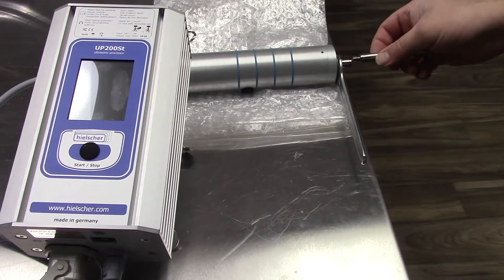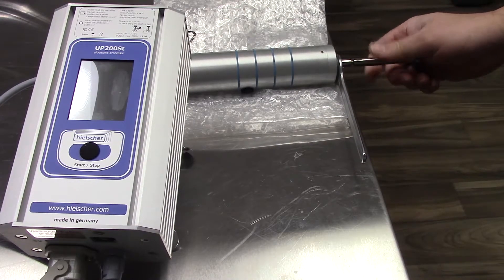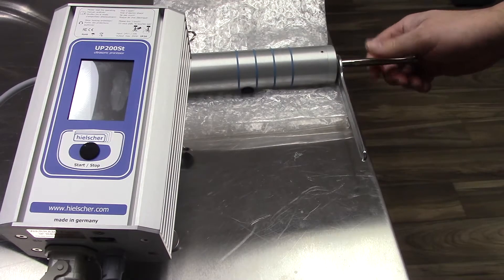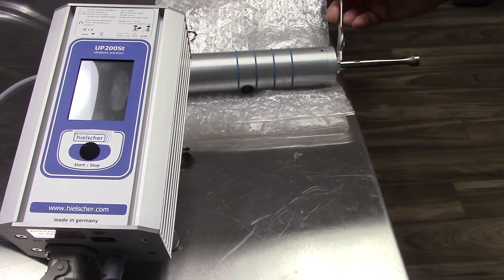For mounting, it's the exact opposite. Turn the sonotrode in clockwise. Position the wrench on the other side.